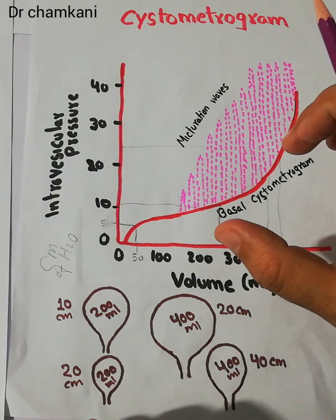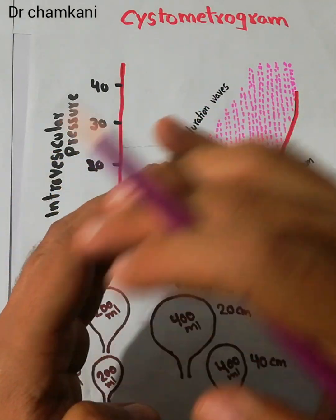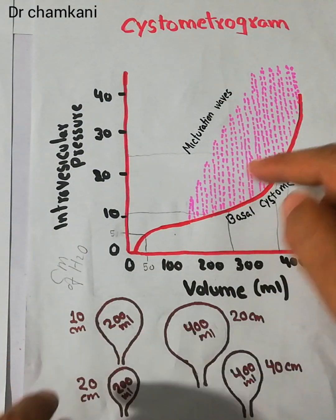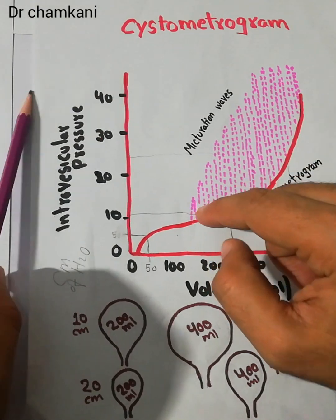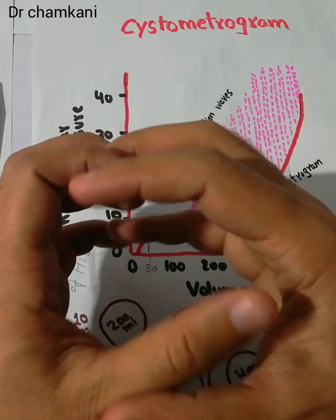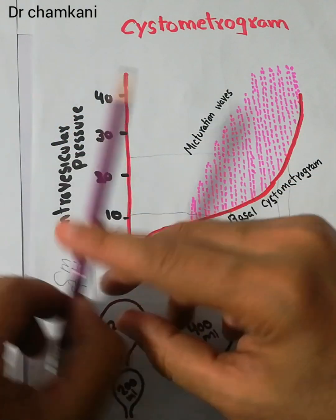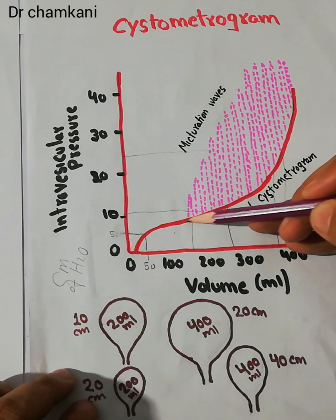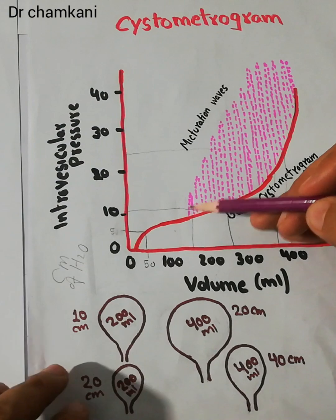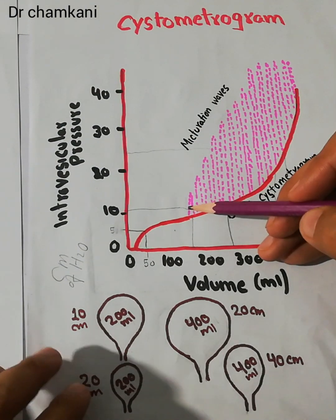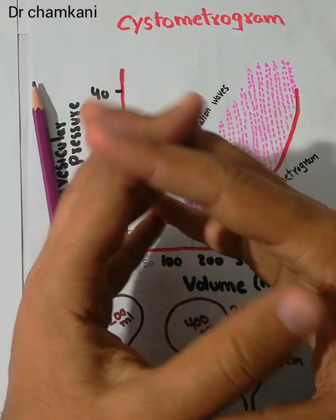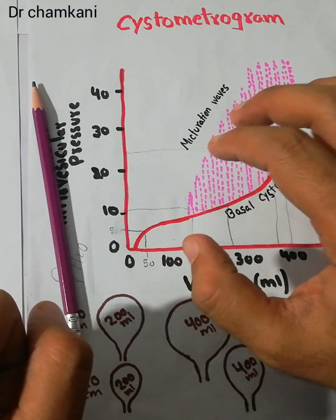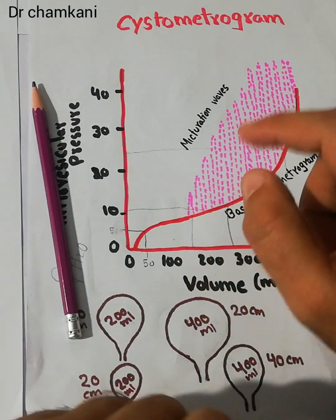On top of this basal pressure — the tone which is basically present in the wall of the urinary bladder — there are some contractions known as micturation waves, and these micturation waves have been plotted here. When a micturation wave comes, the pressure in the urinary bladder increases, due to which contraction of the urinary bladder occurs. The micturation wave basically comes due to the micturation reflex, which we are going to discuss in our coming lectures.